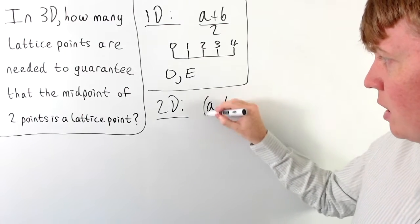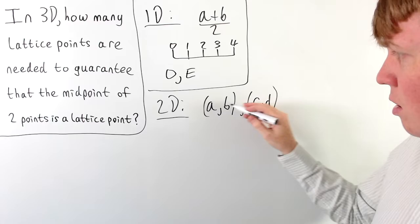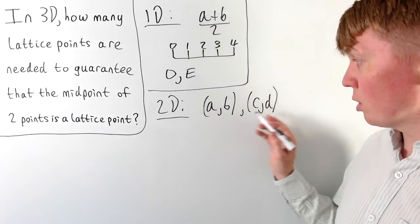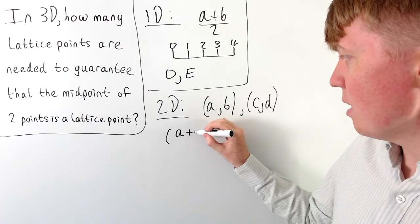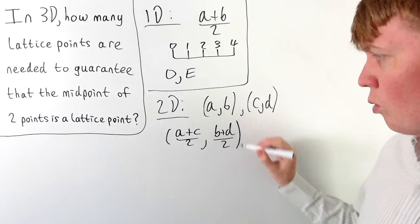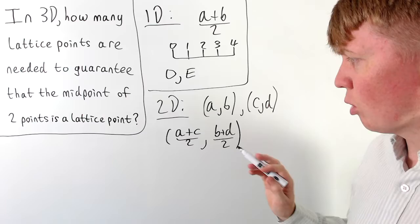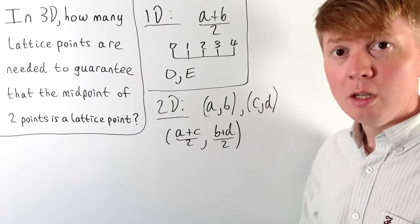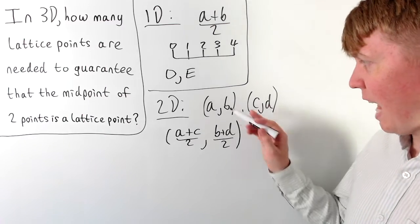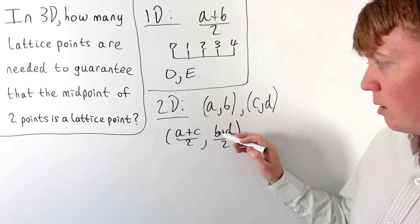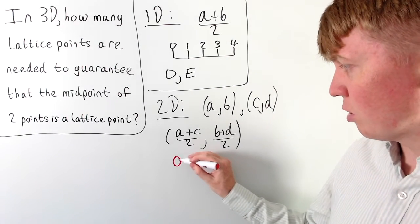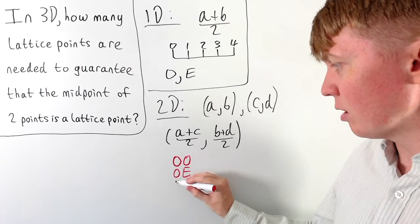Moving up to two dimensions, imagine we have points (a, b) and (c, d) on this lattice grid — points with integer coordinates. The midpoint between these two points is (a + c) / 2 and (b + d) / 2. So once again we need the x-coordinate and y-coordinate of the midpoint to both be integers. In this case we need a and c to have the same parity, but we also need b and d to have the same parity.